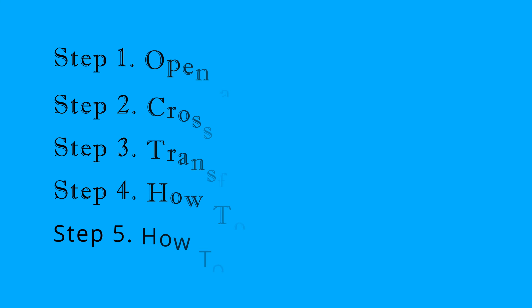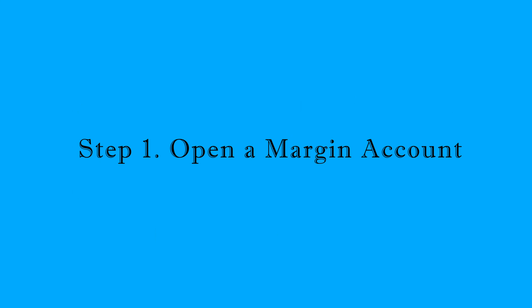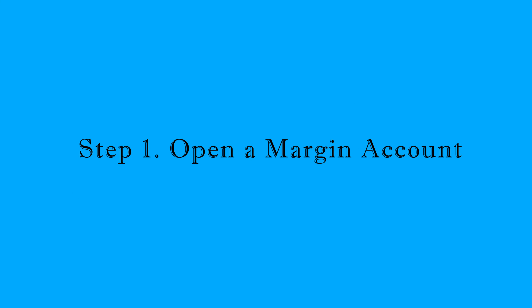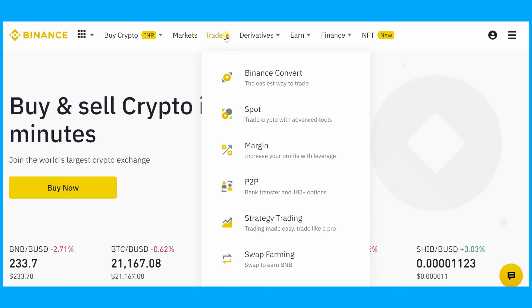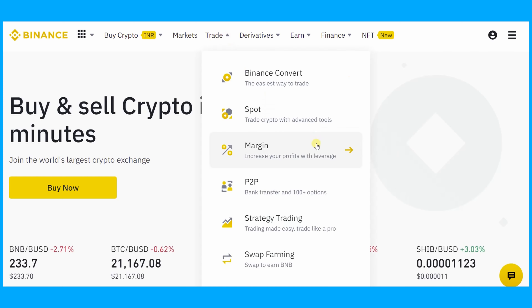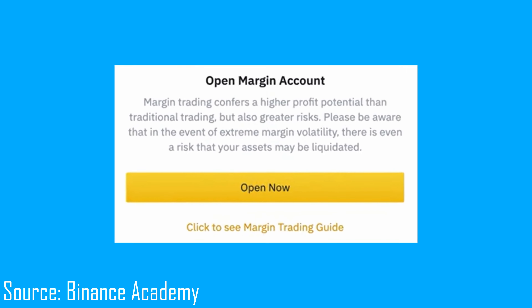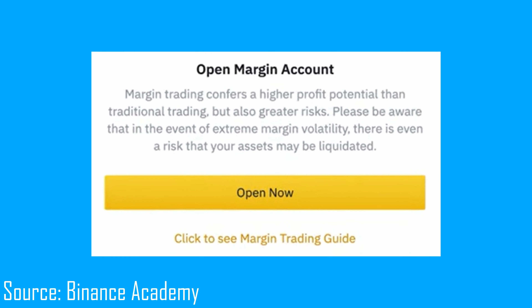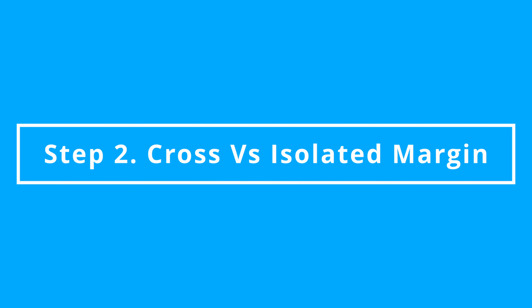You need to follow these five steps to complete margin trading. Let's start with opening a margin account. Log into your Binance account, go to Trade, then open Margin. By default, a margin trading account isn't enabled in your Binance account. Click on the 'Open Now' button to open a margin account.